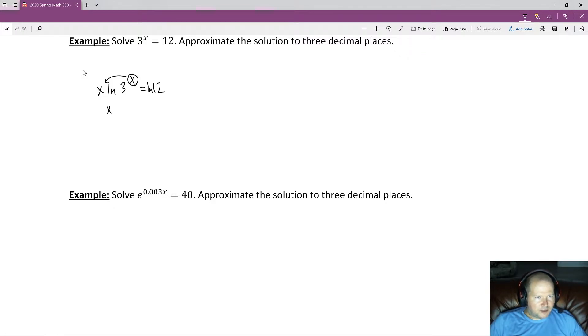So now we would end up with x natural log of 3 equals natural log of 12. Next, we want to undo the multiplication of x by the natural log of 3. So we divide by the natural log of 3. And whatever we do to one side, we do to the other.